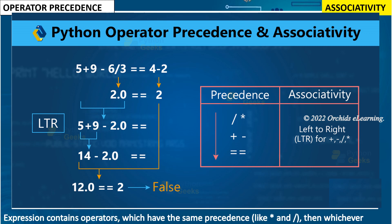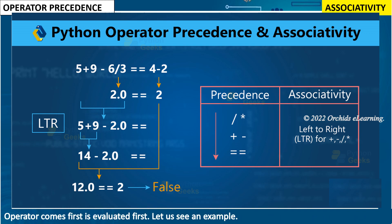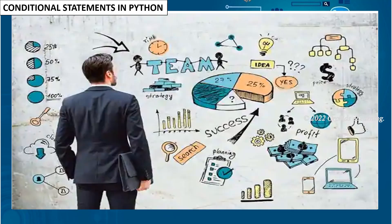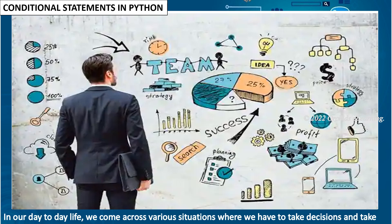When an expression contains operators with the same precedence, such as multiply and divide, whichever operator comes first is evaluated first. Let us see an example. Look at the chart that shows operator precedence. In our day-to-day life we come across various situations where we have to make decisions and take actions accordingly.